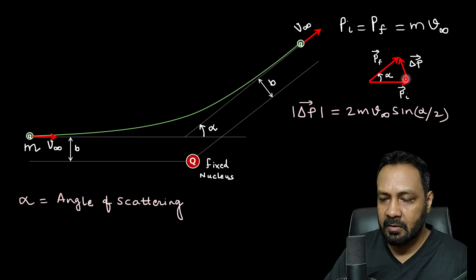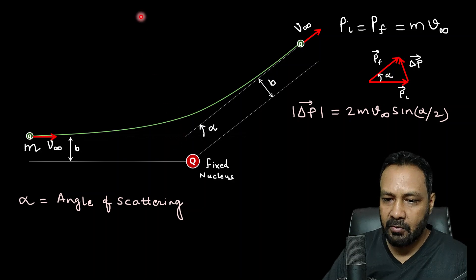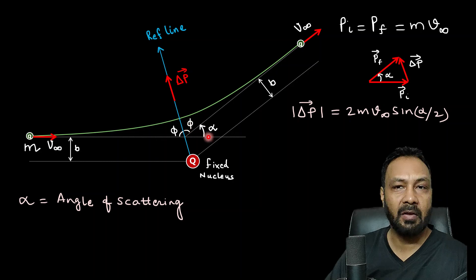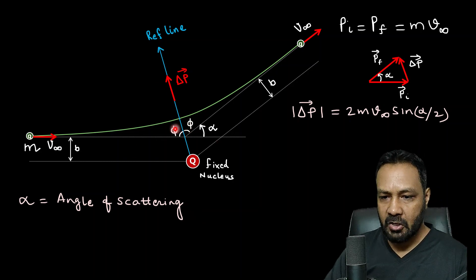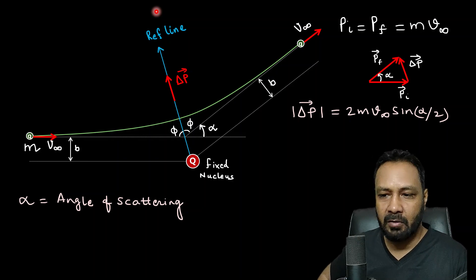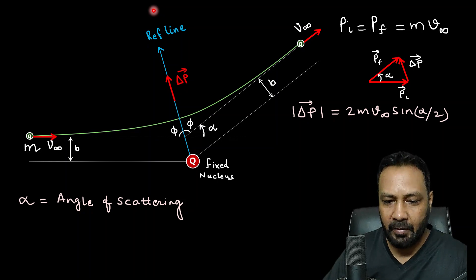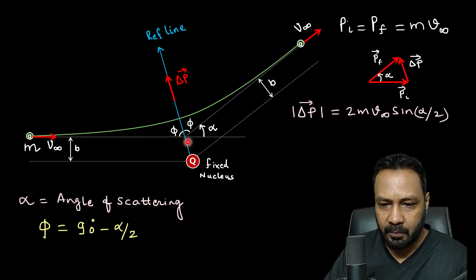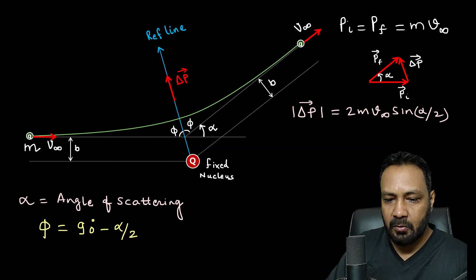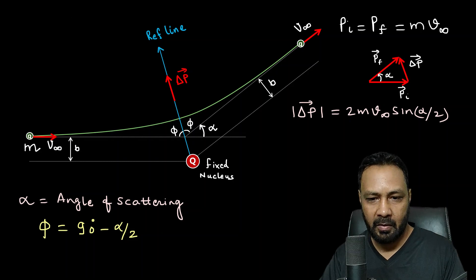Calling each base angle φ, we have 2φ + α = 180°, so φ = 90° − α/2. The direction of Δp is along the reference line (the axis of symmetry). I will also calculate Δp by the impulse method and equate the two results to obtain α. At a general moment, the force from the fixed nucleus is along the radial direction (repulsive). At angular position θ from the reference line, the component of force along the reference line (direction of net momentum change) is F·cos θ.